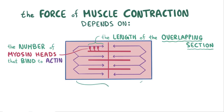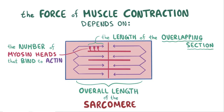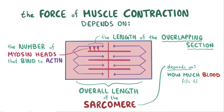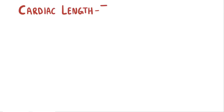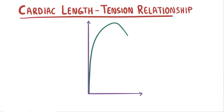The length of the overlapping section depends on the overall length of the sarcomere, and the length of the sarcomere depends on how much blood fills the ventricle during diastole, because that affects how stretched out the overall muscle wall and each sarcomere within it end up being. This relationship is known as the cardiac length-tension relationship, and it can be shown by this graph.